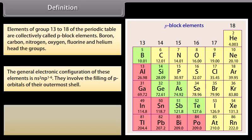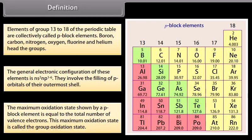The maximum oxidation state shown by a P-block element is equal to the total number of valence electrons. This maximum oxidation state is called the group oxidation state.